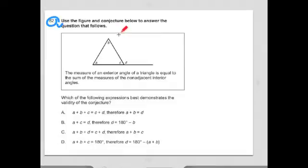And it gives us this diagram in a box and it shows what looks like a triangle on a line. And I have these three angles inside that triangle: A, B, C, and D is the outside exterior angle. The measure of an exterior angle of a triangle is equal to the sum of the measure of the non-adjacent interior angles. It gives us this statement.